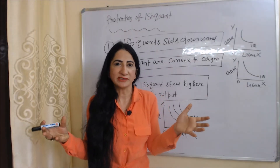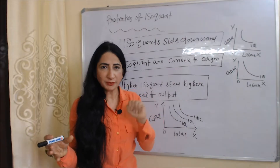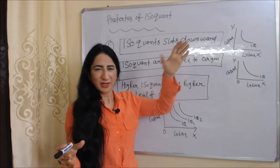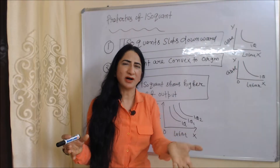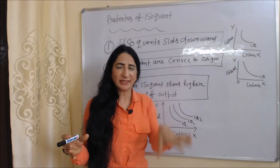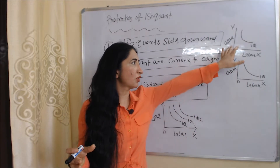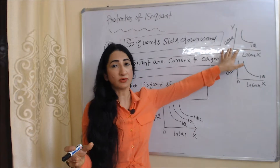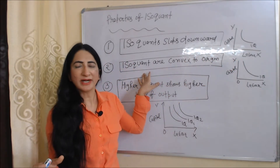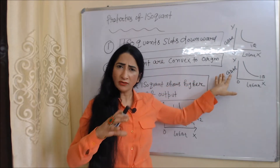Now we are going to talk about properties of isoquant. The first property is that isoquant slopes downward — it does not have an upward, vertical, or horizontal slope; it always has a downward slope. The second property is that isoquants are convex to the origin, because of the diminishing marginal rate of technical substitution.